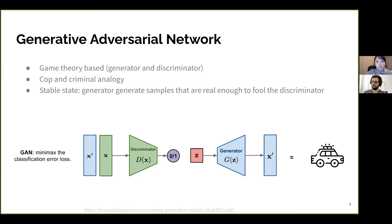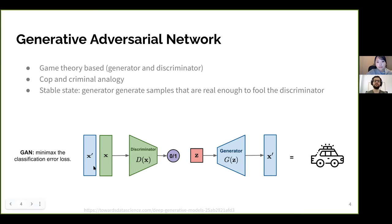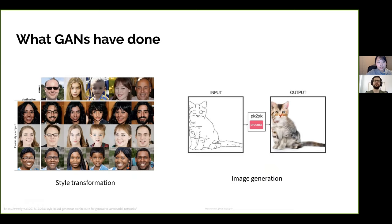This prompted me to generate a novel GAN network. A GAN, or Generative Adversarial Network, is based on game theory. You have a generator and a discriminator — think of it as a cop-and-criminal analogy. The generator tries to generate fake data, the discriminator tries to catch it. The stable state is when the discriminator can no longer distinguish between real and fake data.